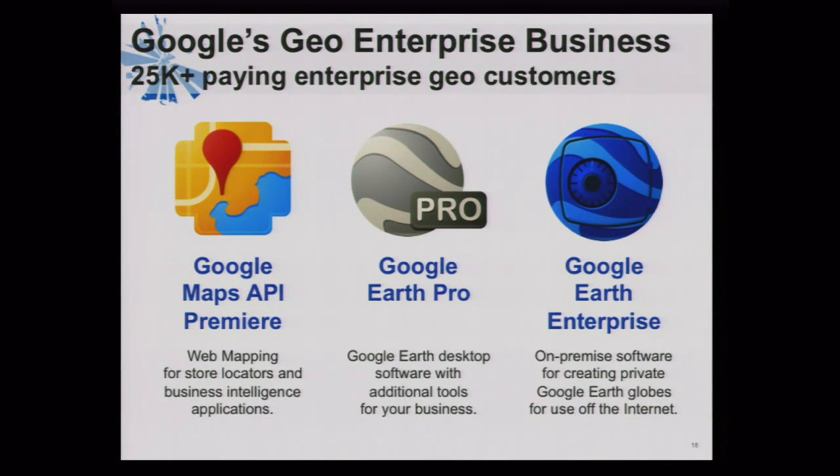Another typical example: last year, after the oil spill off the coast of Louisiana, the state of Louisiana used Google Earth Enterprise to stand up a common operational picture — a map that many first responders used to collaborate on the recovery and cleanup efforts. We've been in the enterprise Geo business for about seven years, with more than 25,000 paying enterprise customers. Our existing product portfolio includes Google Maps Premier, Google Earth Pro, and Google Earth Enterprise — critical tools our customers depend on for mission-critical applications.